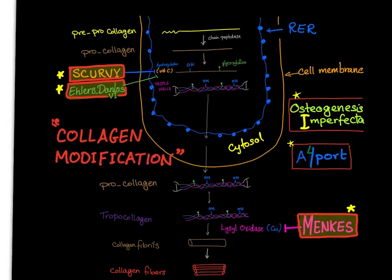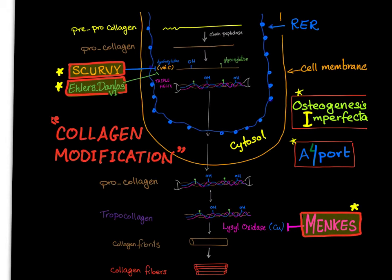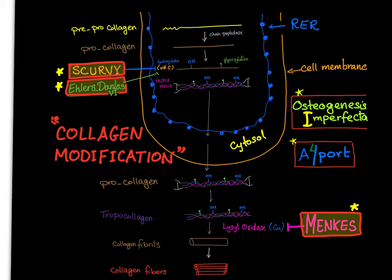In brief: pre-pro collagen, by signal peptidase, yields pro-collagen. Then hydroxylation, glycosylation, and triple helix formation occur. It is secreted outside the cell as pro-collagen. Removal of the pro-peptides yields tropocollagen. Lysyl oxidase gives us collagen fibrils, which aggregate to form collagen fibers.